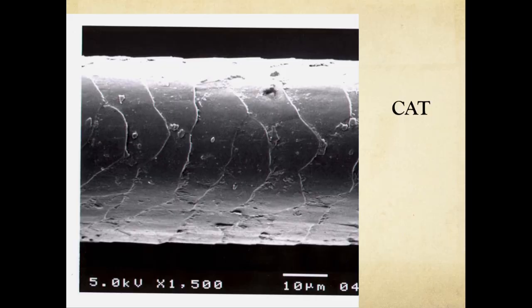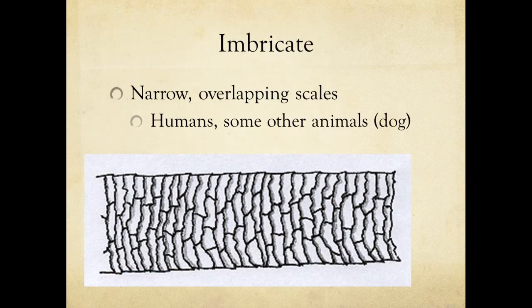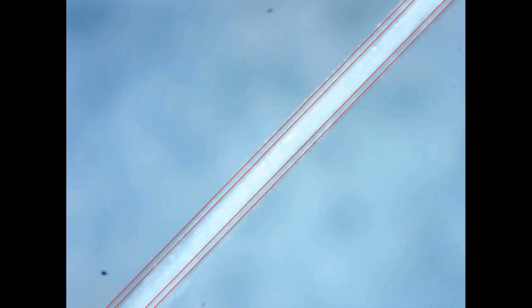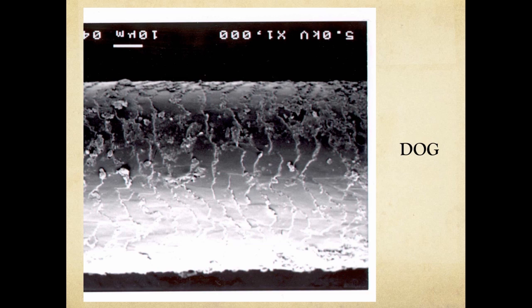This is a cat hair under the ProScope digital microscope. I want to draw your eye to the cuticle pattern along the outer layer of the hair. If you put this hair under a high-powered scanning electron microscope, the spinous cuticle pattern is clearly visible. The third major cuticle pattern is called imbricate, composed of narrow scales that look a little bit like stacked bricks. Humans and dogs have this cuticle pattern. This is a dog hair magnified using the ProScope microscope — the scales of the cuticle are outlined here. Under a scanning electron microscope, the imbricate pattern would be much clearer.